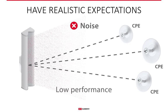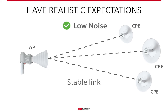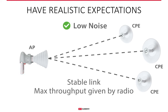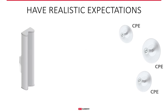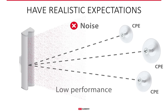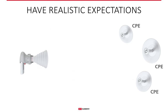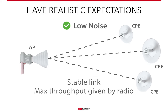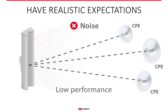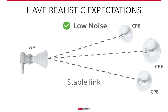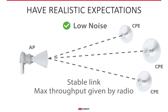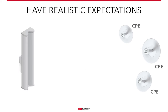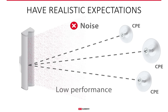We need to have realistic expectations and understand the hardware we're using. The horns solve the problem of noise and self-interference through the lack of side lobes. Once the noise issue is solved, we need to be aware that the rest of the hardware in the equation also has limitations. The maximum aggregate throughput you can achieve is limited by what the radios can handle. What the horns will do is push the radio to its limit to deliver the maximum throughput possible, but the chipset or radio itself still has limitations.